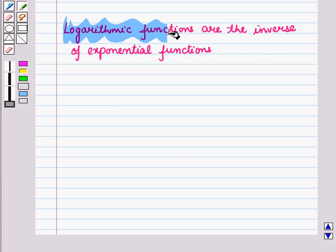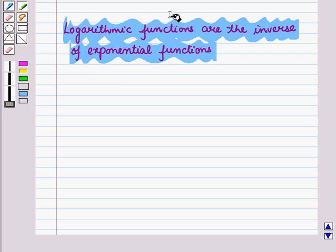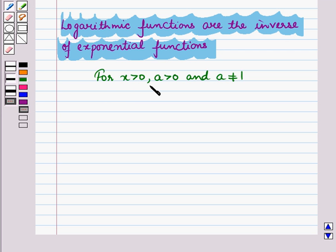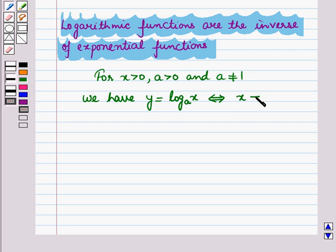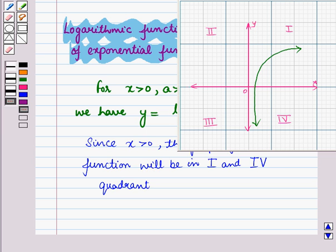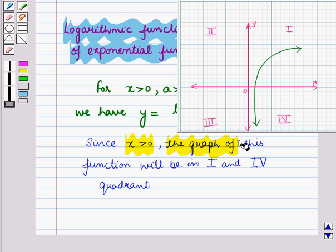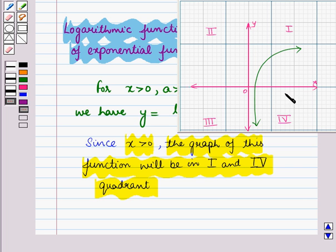Logarithmic functions are the inverse of exponential functions. For x greater than 0, a greater than 0, and a not equal to 1, we have y = log x to the base a if and only if x = a raised to power y. Since x is greater than 0, the graph of this logarithmic function will be in the first and fourth quadrant, as in these two quadrants for any value of y, x is always positive.